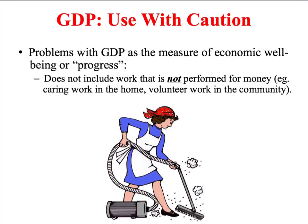A high GDP per capita implies a healthy economy with high levels of wealth generation, and in turn this wealth should trickle down and raise the standard of life of the entire population. However, in reality it's not quite as straightforward. Although GDP is a useful starting point for looking at development, we need to use it with caution. For example, GDP doesn't include all types of work — it excludes work not performed for money, such as caring and domestic labour that women mainly do at home, or volunteer work in the community.